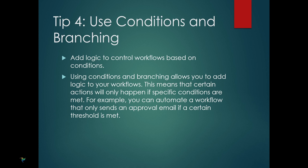Let's talk about conditions and branching in Power Automate. This feature allows you to add logic to your flows so that certain actions will only trigger if specific conditions are met. For example, you can set up an approval workflow where an email is only sent if a certain threshold is reached. It's a great way to make your automation more dynamic and responsive to real-world situations, ensuring that your workflow runs more efficiently and accurately.